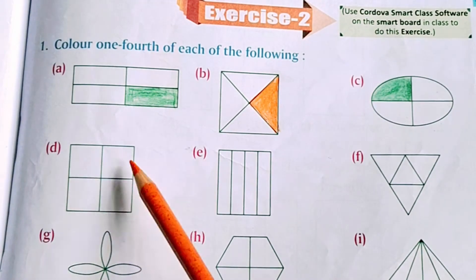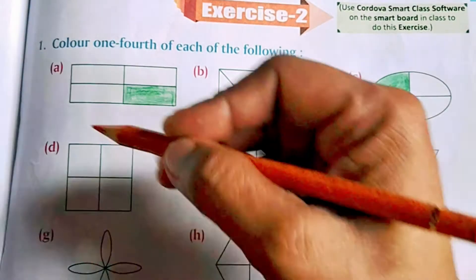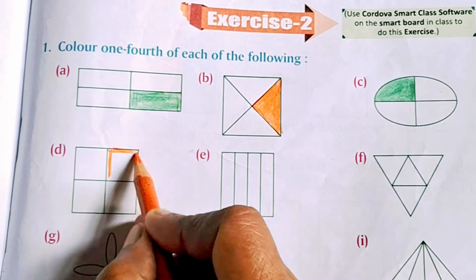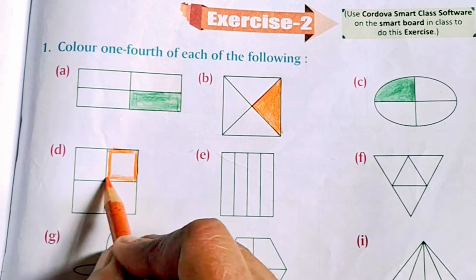Children, in all the diagrams you have to color one part of each diagram to show one-fourth of the diagram.